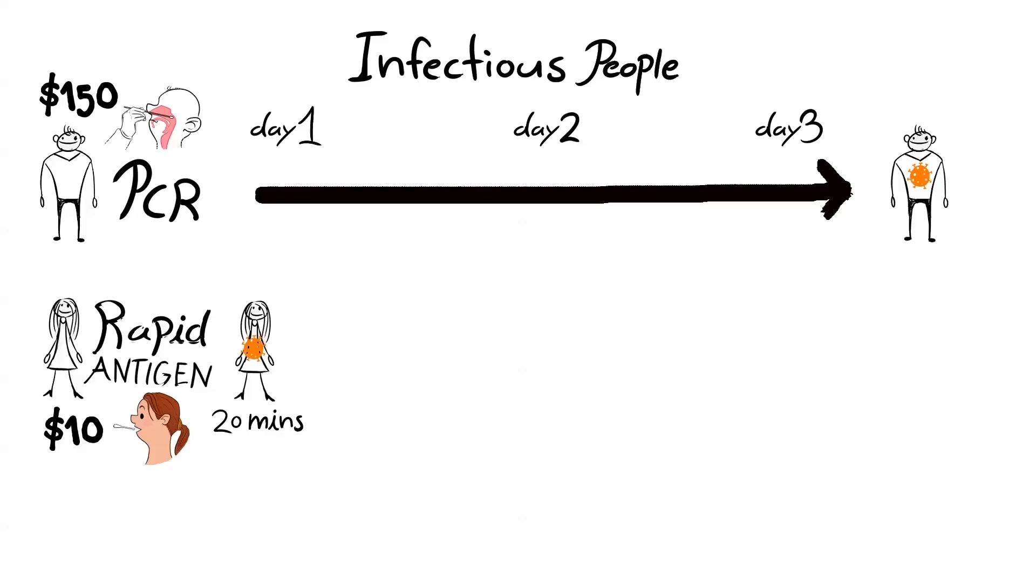But it's not quite as good at catching all, so there will be a small amount who get a negative but they're pre-symptomatic and infectious for a short period. Easy solution: 12 to 24 hours later you can do another $10 test, 20 minutes, and then you can pick up these guys. So between the two you've got a perfect cheap fast system.